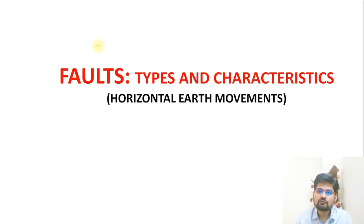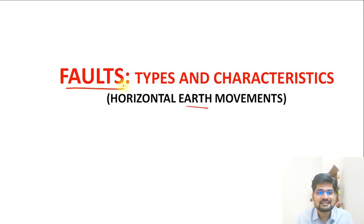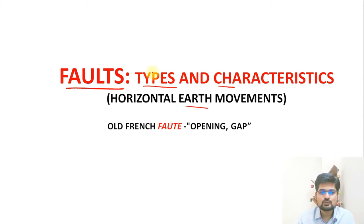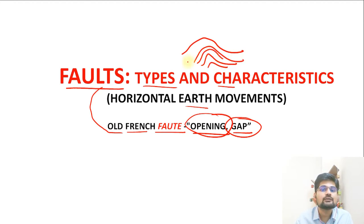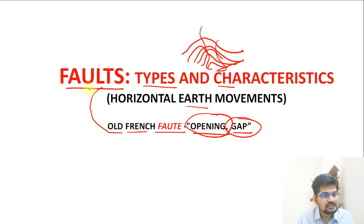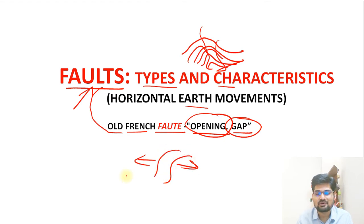After we learned about folds and their types in the previous lecture, the next part of this diastrophic Earth movement is the creation of faults. The word 'fault' comes from old French — 'faute' — which means opening or a gap. In a fold, the layers were in continuity with no opening or gap between them. In a fault, there is a moving away or a gap creation — that is the key difference.